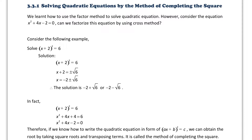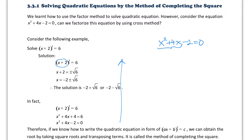In fact, if we expand it and go back to the general form, this is the original quadratic equation. That means if I want to solve this quadratic equation, I can reverse the direction and solve it. That means if I know how to combine terms into a perfect square, I can make it (x + 2) all squared.